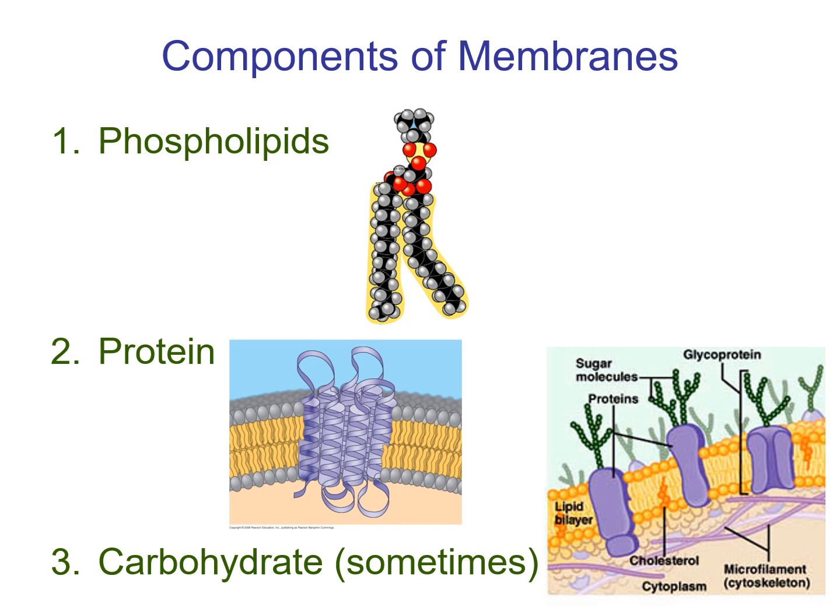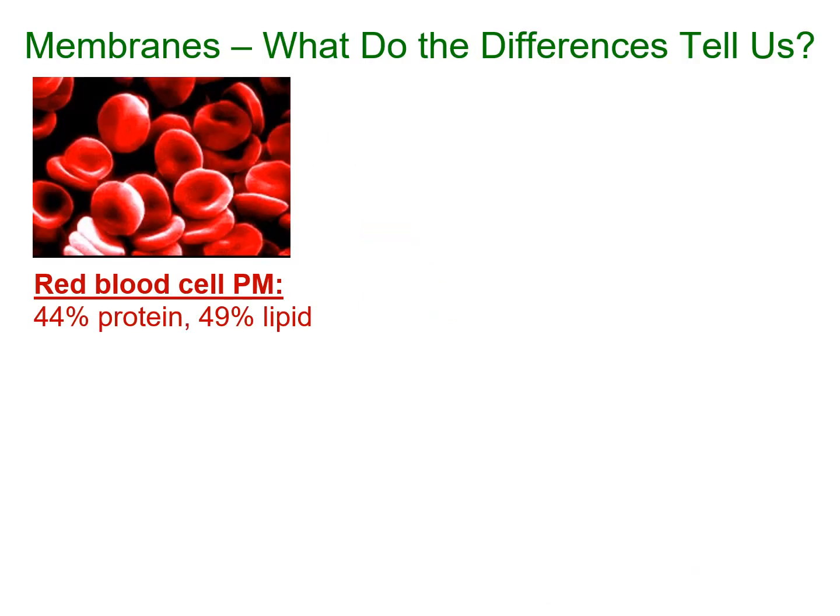All membranes are made up of phospholipid and some protein, but there can be huge variation in the amounts. Carbohydrates are quite often present, but not always, and when they are present they're generally only on the outside of the cell. The proportions of protein and lipid in a membrane can tell us quite a lot about what the membrane does.